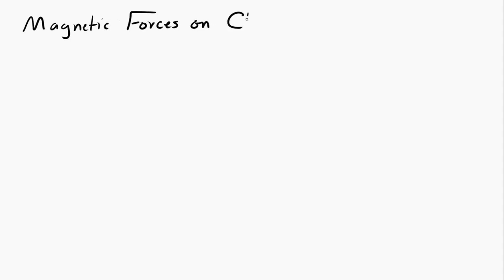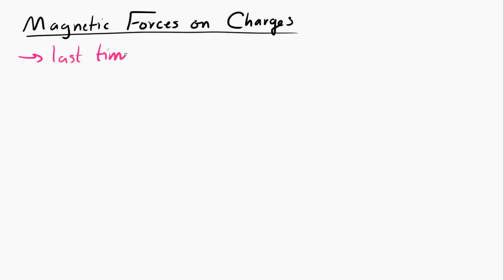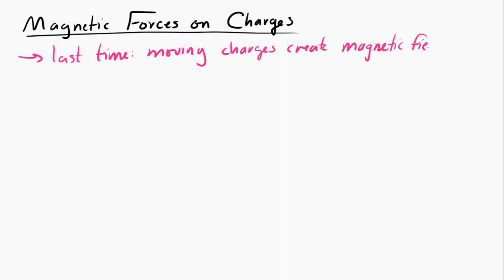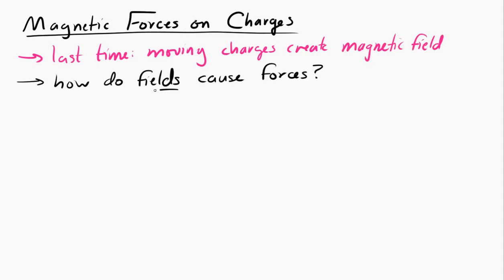Let's look at magnetic forces on charges. Last time we saw that moving charges create magnetic fields. This time we're going to look at how those magnetic fields can then cause forces on other charges. This is analogous to electric fields, where charges created electric fields and then electric fields could cause forces on other charges.